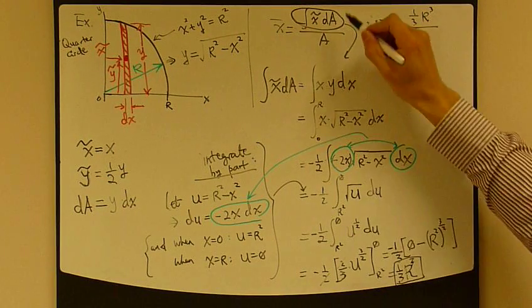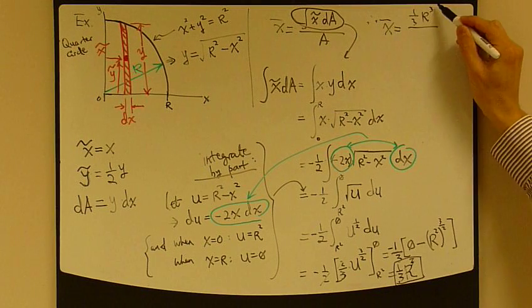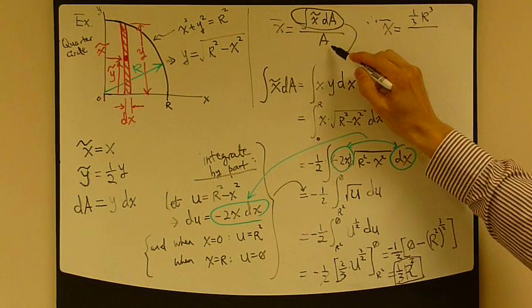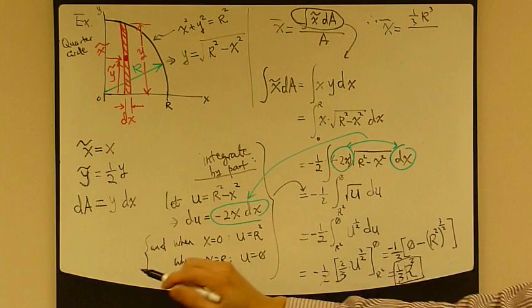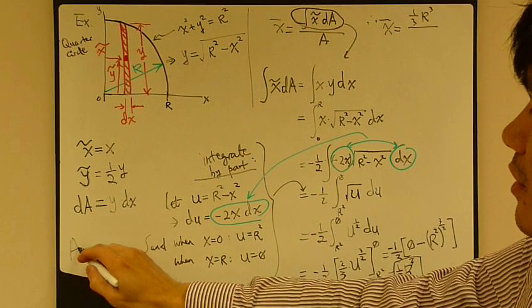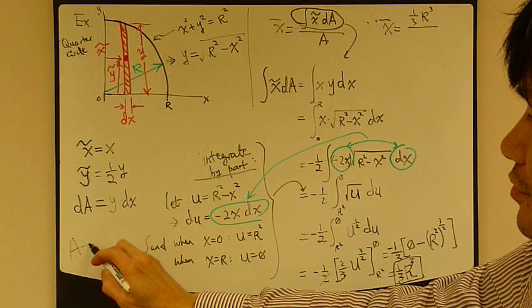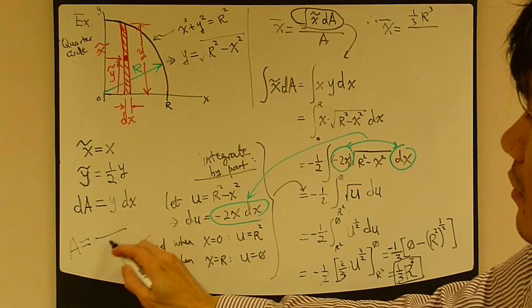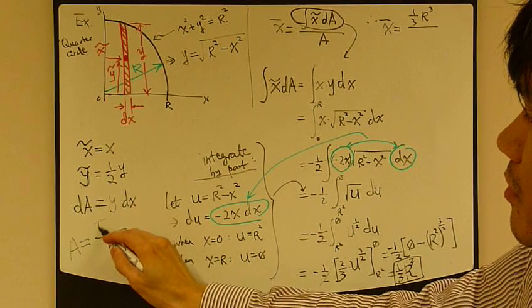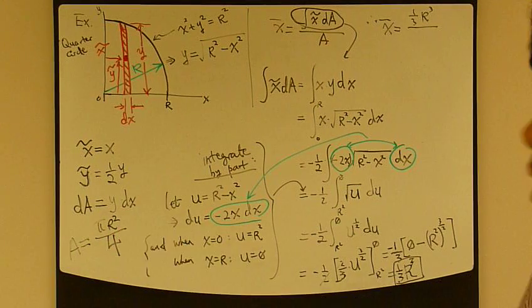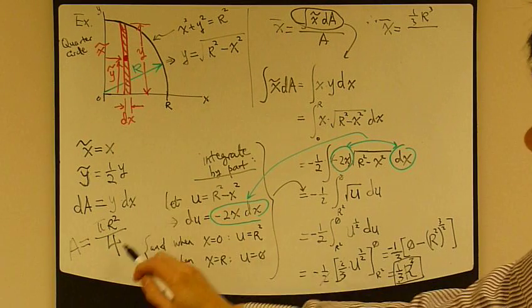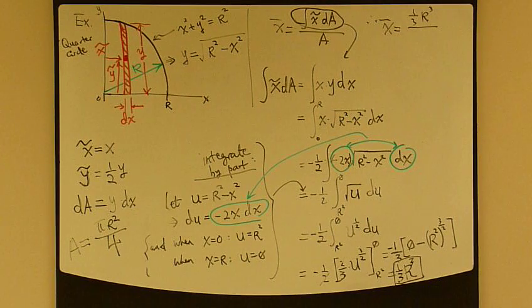So if we're getting back into this original equation, 1/3 of r cubed divided by area of the quarter circle. Now area of a circle is pi r squared, so the area of this guy is 1/4 of pi r squared, right?